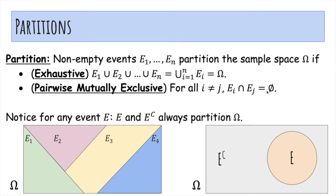Notice for any event E, E and E complement always partition the sample space. Here's E, here's E complement. They don't overlap, and they cover everything.